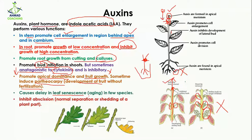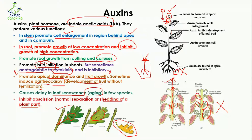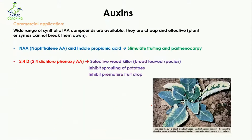Auxins cause a delay in leaf senescence, meaning they prevent the leaf from aging. They also inhibit abscission, which is the normal separation or shedding of plant parts. In autumn, leaves shed, but if auxins are present they prevent this. When auxin supply stops, the leaf is shed from the shoot.